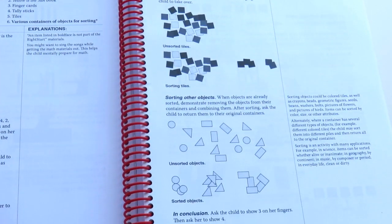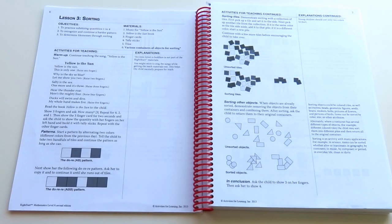Then you move on to more activities which here are making patterns with the tiles and sorting tiles and other objects. The lesson ends with a quick question for your child where you ask them to show you a number of fingers on their hand.